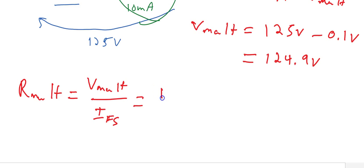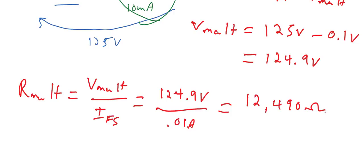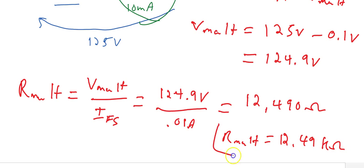And we can say 124.9 volts divided by 0.01 amps, or 12,490 ohms. That means that the multiplier resistor will be equal to 12.49 kΩ, or 12,490 ohms.